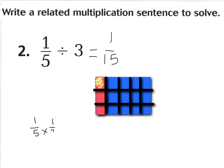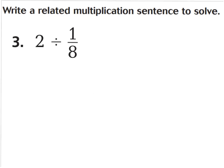This shows that one-fifth divided by three would equal one-fifteenth. And our related multiplication sentence would be one-fifth times one-third, because we're finding one-third of our one-fifth part, which would equal one-fifteenth. And there's my one-fifteenth portion. For question number three, the question says two divided by one-eighth.